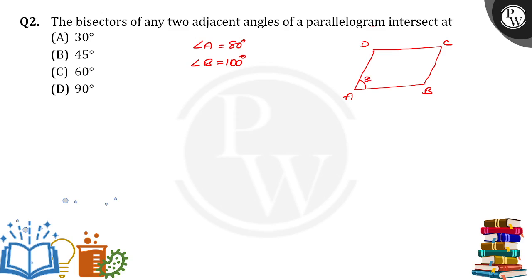So this will be 80 and this will be 100. Now, what is given here, the bisector of any two adjacent angles. I am drawing an angle bisector for angle A, I am drawing angle bisector for angle B, so both will meet each other at what point? At O.